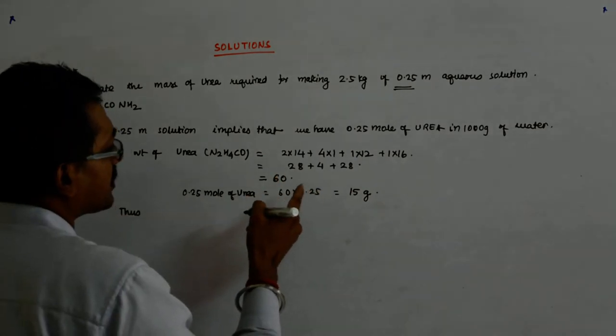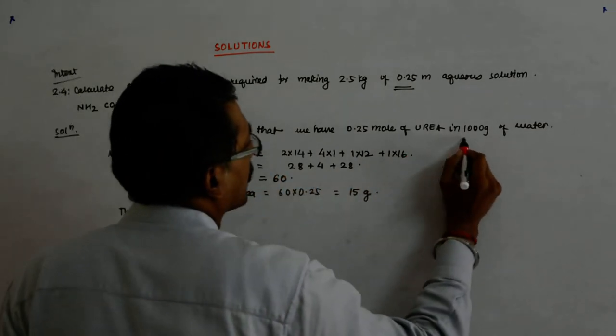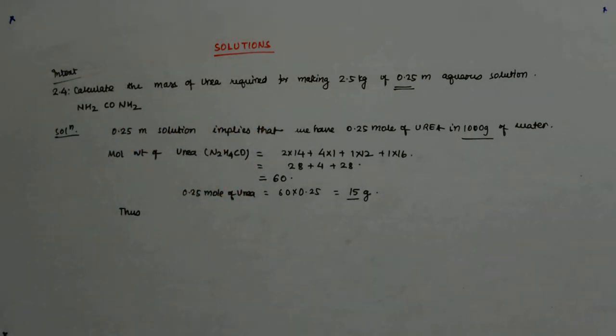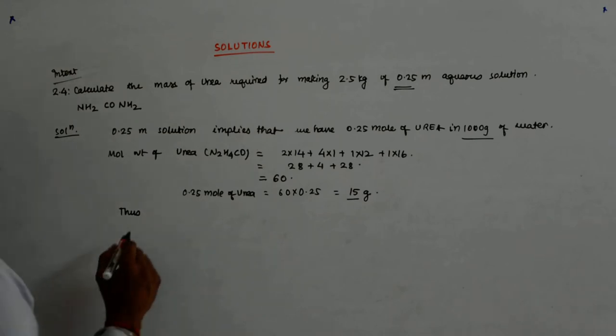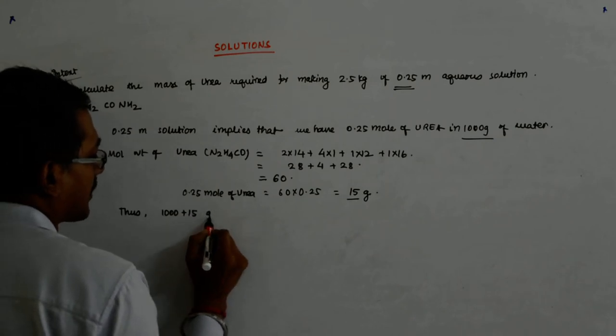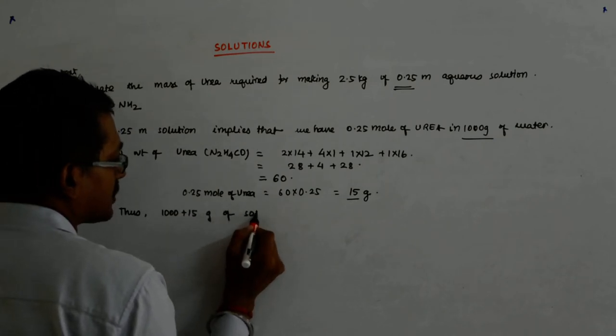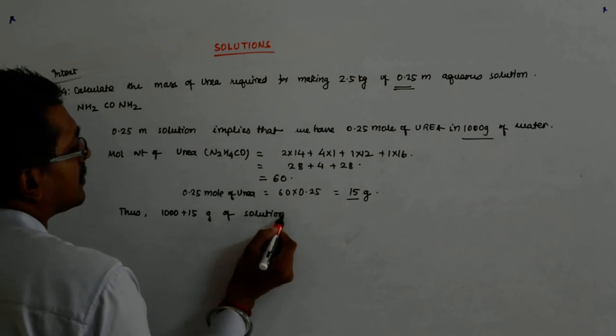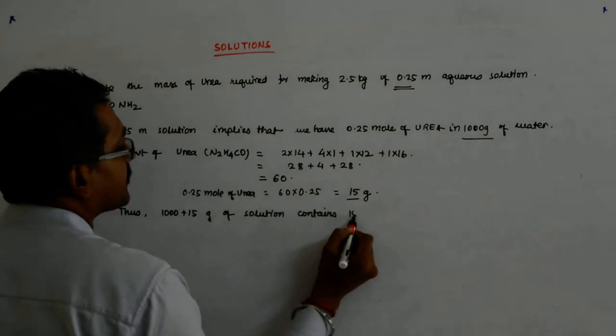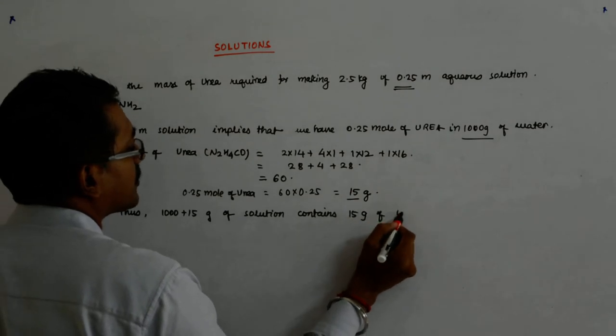So the solution contains 1000 grams of water for it to be 0.25 molal. Now 1000 plus 15 grams of solution contains 15 grams of urea.